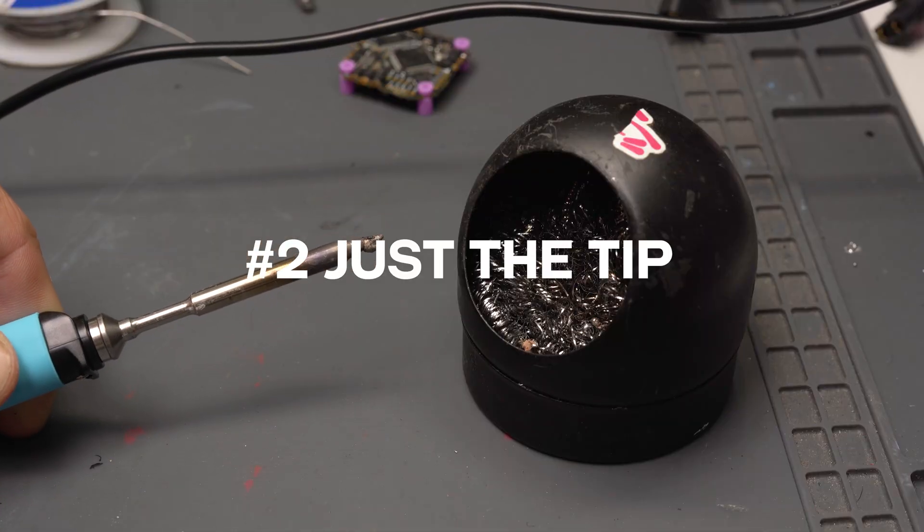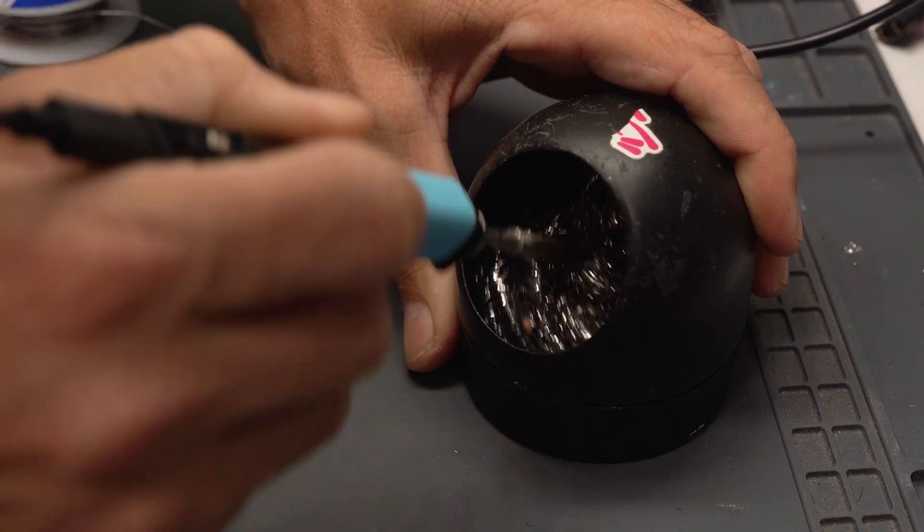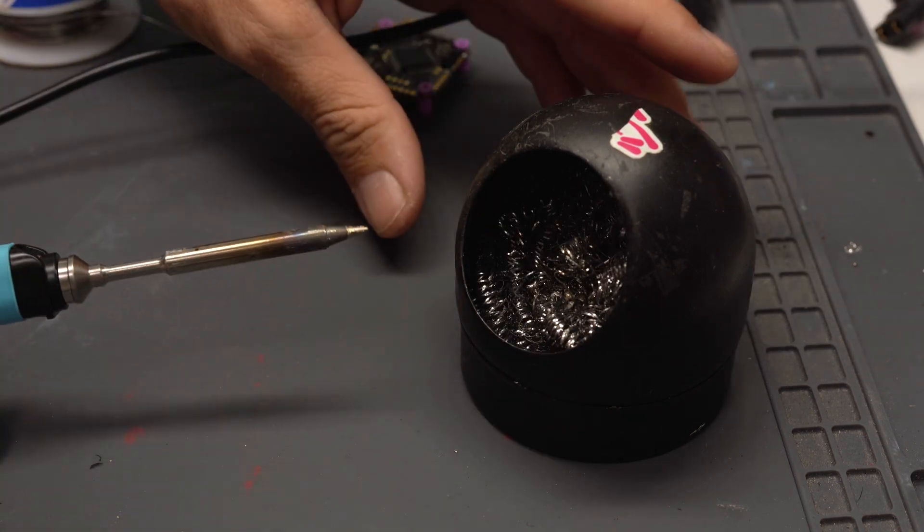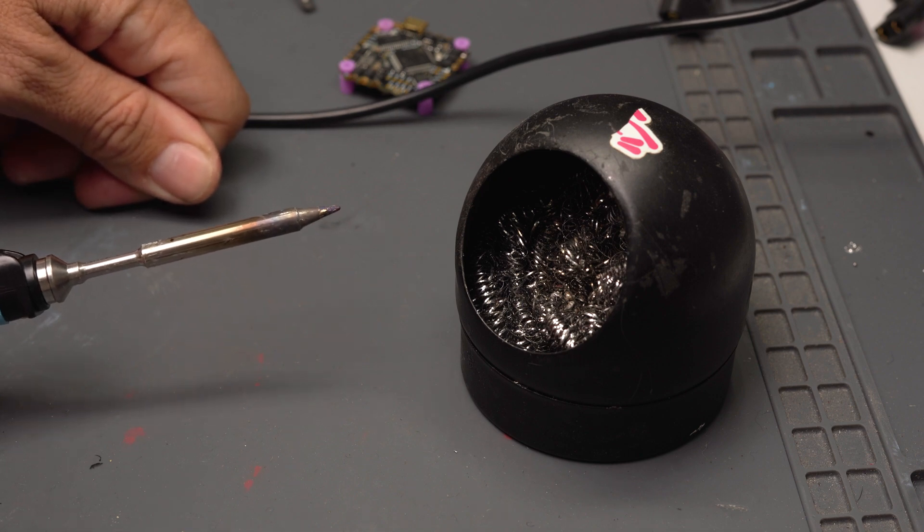So tip two, clean your tip. I think I'm guilty of this more than anything else. I try to solder with a dirty tip and it causes me problems when all you got to do is clean the tip of your soldering iron and it's going to help you result in a cleaner look.